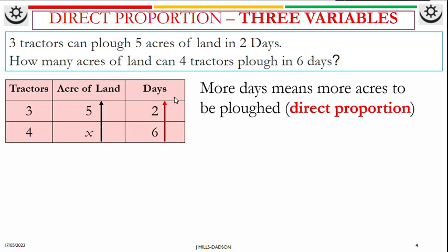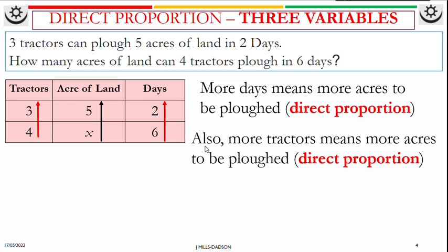So you can see all going up. Now let's see acres of land and tractors. Also, more tractors means you're going to plow more area of land, that is also direct proportion. So that's why they are all pointing up.